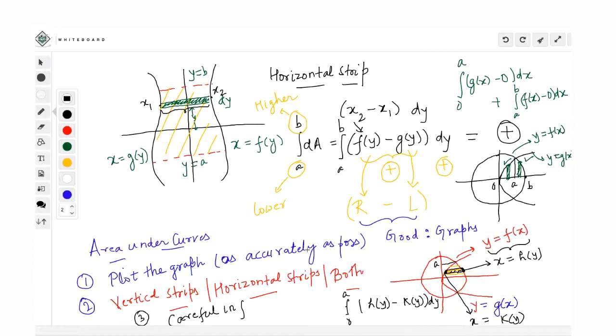So what I'm going to do is I'm going to straight away start with some problems. Are you all ready with your notebooks? All right, so here comes my friends, the first problem: find the area lying above x-axis and included between x² + y² = 8x and y² = 4x.